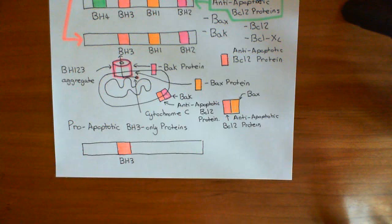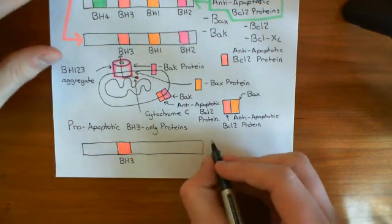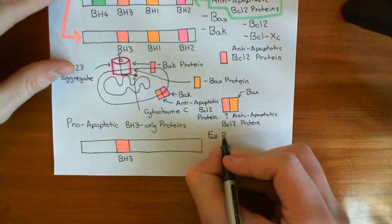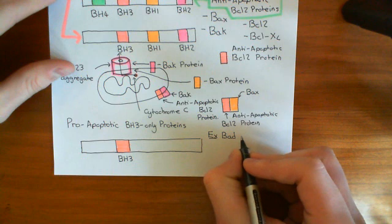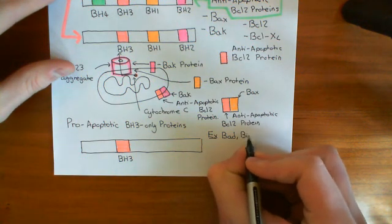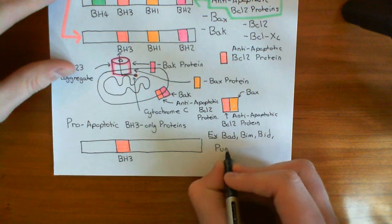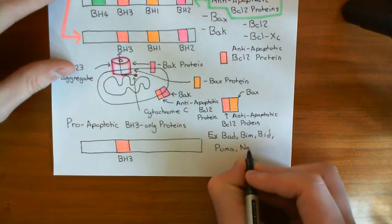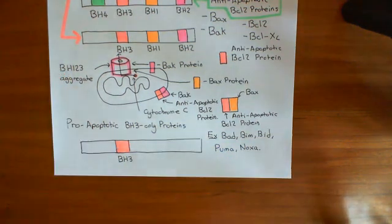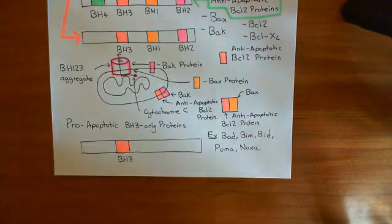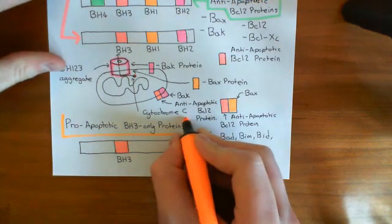There are quite a few examples of these proapoptotic BH3-only proteins, and they have just as ridiculous names as all the rest. BAD is an example, BIM is another, and then there's BID. There's also PUMA — which always makes me think of Lion King — and NOXA as well. So BAD, BIM, BID, PUMA, and NOXA are all examples of proteins that come under this final family of BCL2 proteins: the proapoptotic BH3-only proteins.